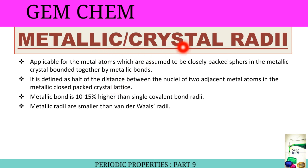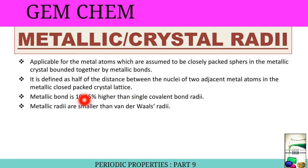Now we will look at metallic or crystal radii. This is applicable for metal atoms, which are assumed to be closely packed spheres in the metallic crystal, bounded together by metallic bonds. It is defined as half the distance between the nuclei of two adjacent metal atoms in the metallic close-packed crystal lattice. The metallic bond radius is 10 to 15% higher than the single covalent bond radii because the metallic bond — which controls the proximity of metallic atoms in the crystal lattice — is not a localized bond like a covalent bond. Therefore, bonded metal atoms in the metallic crystal lattice are not drawn as close to each other as they are in a covalent bond, resulting in the metallic radius being 10 to 15% higher than single covalent radii.